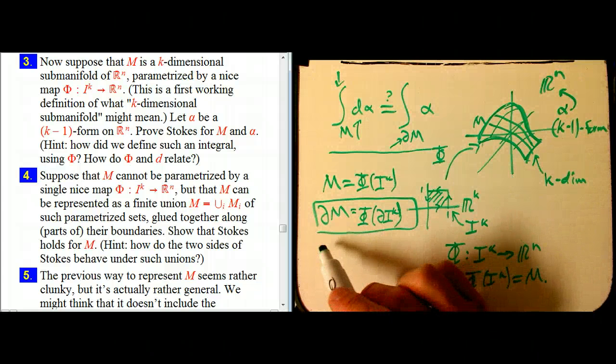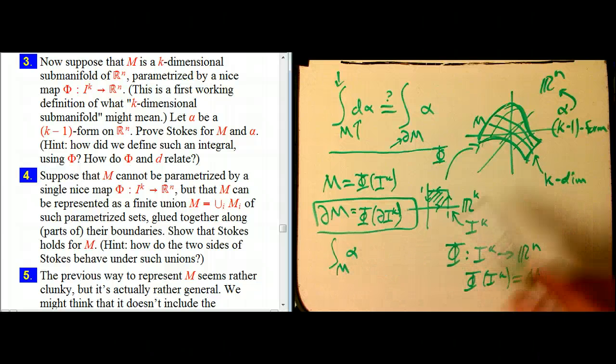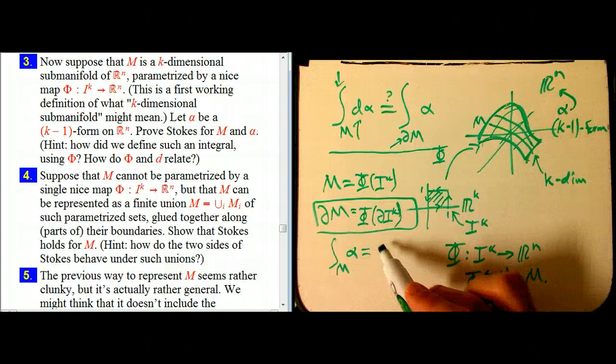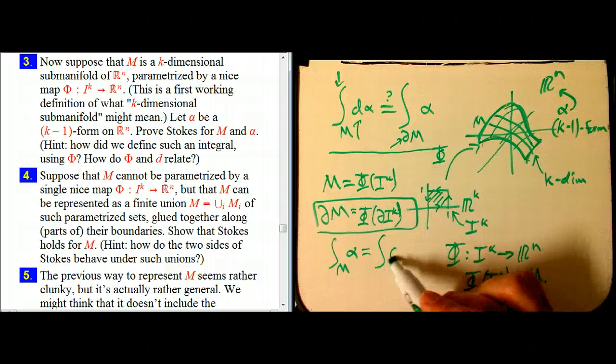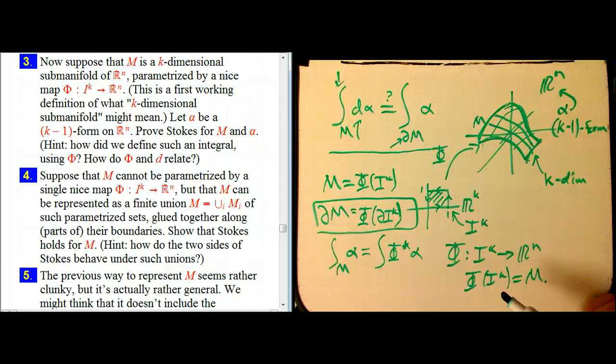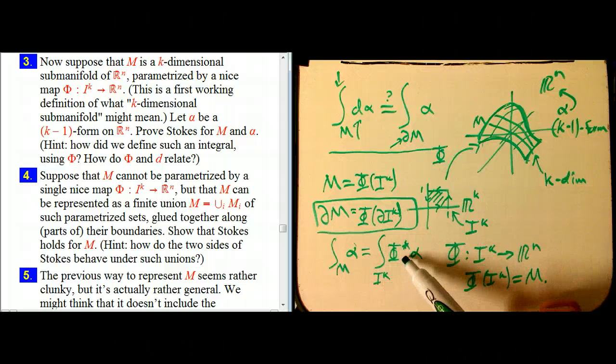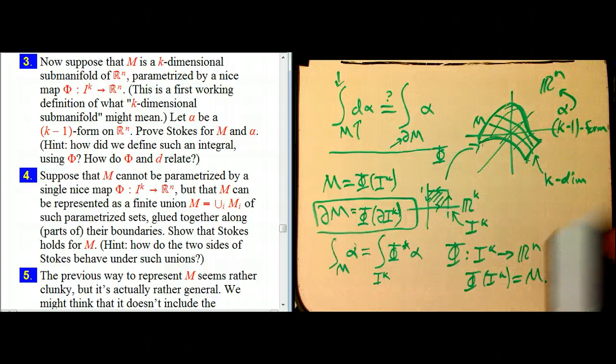Now, what about integrals? Well, actually, you know, what is the integral over this weird subset of alpha? How do we define that? We defined it using the pullback by phi. And that takes it back to IK. So that's nice. Once again, essentially by definition, the integral respects, or the pullback respects that integral, because the integral is actually defined in terms of the pullback.